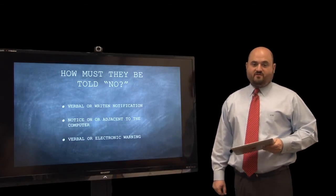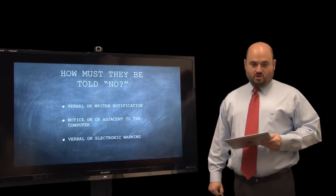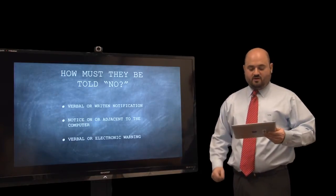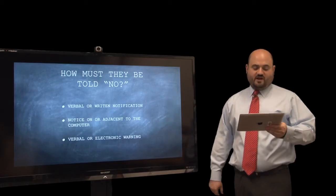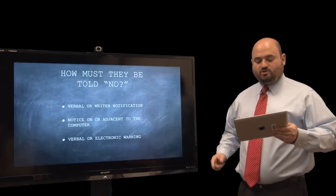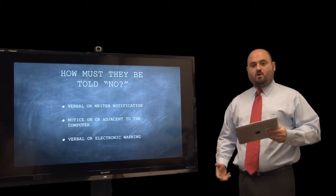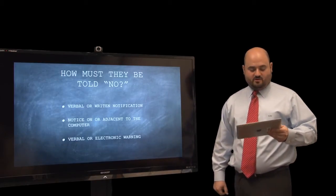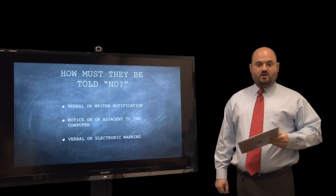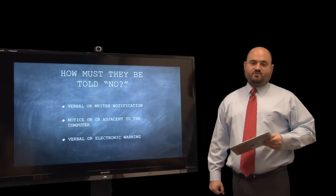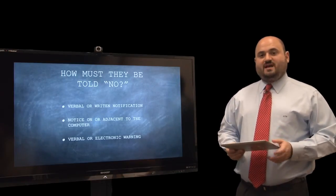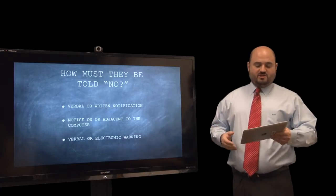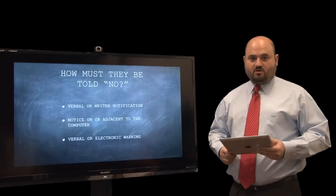However, the law used to outline three different ways, and it's safe to say those older methods are probably still good, though we'll have to wait to see how courts decide going forward. The three ways the statute used to specifically define — which were later removed — are: being told no verbally or by written notification such as a work policy; a notice on or adjacent to the computer, like posting a sign; or verbal or electronic warnings from the computer itself, such as an electronic message stating who may use it.